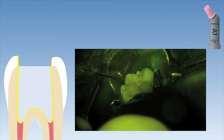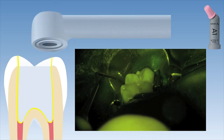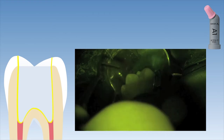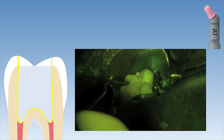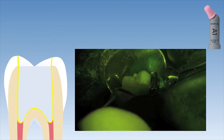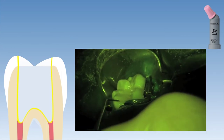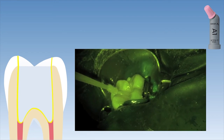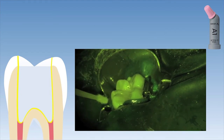The last step for restoration of this access cavity is to cover the SDR material with a normal, regular viscosity composite resin. Here you can see the SDR material was capped by applying Ceram.X Spectra ST composite resin, shade A1, using the successive cusp build-up technique.